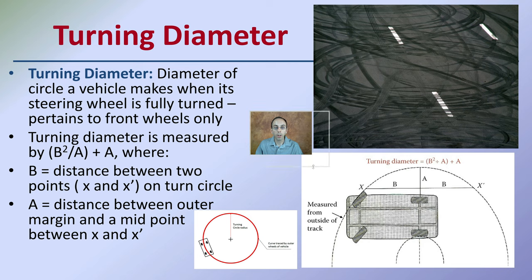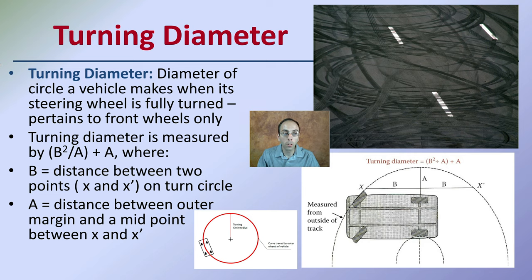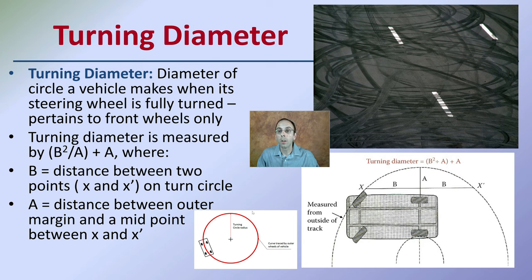The turning diameter is the diameter of the circle a vehicle makes when its steering wheels are fully turned, and it pertains to front wheels only. Turning diameter is measured by B squared over A plus A, where B is the distance between two points on the turning circle, and A is the distance between the outer margin and the midpoint between X and X-dot. This can be used to determine the turning diameter involved in skid marks or quick departures, helping establish whether the suspect's car could have made those tire prints.